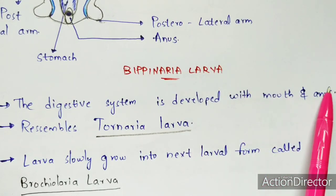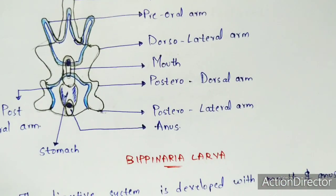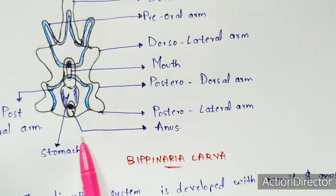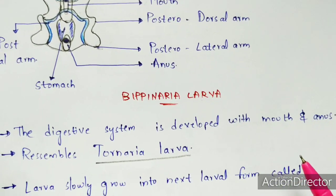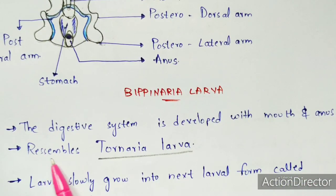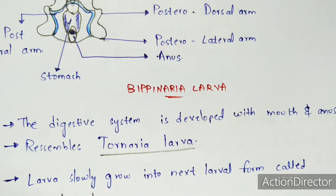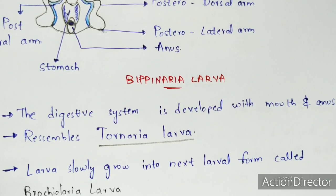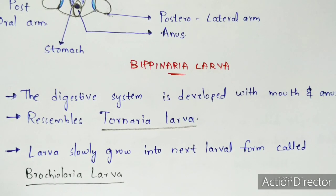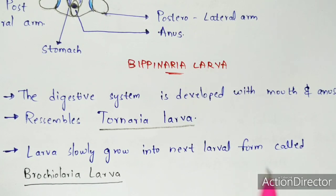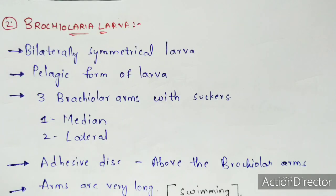The digestive system of bipinnaria larva is developed with a mouth and anus. It resembles the structure of the tornaria larva. This larva slowly grows into the next larval form called the brachiolaria larva.